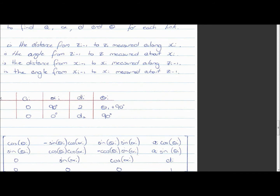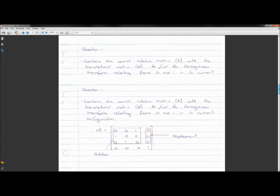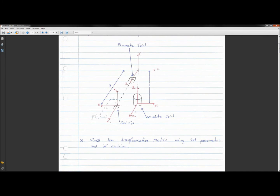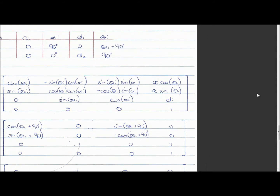For d_i: link one is joined to joint one which is a revolute joint, so d_1 will be constant and θ_i will be variable. d_1 is the distance from x_0 to x_1 measured along the z_0 axis. Looking at the diagram, to move from x_0 up to x_1 along z_0 is a distance of 2, and that's what's recorded in the table.